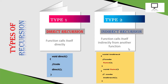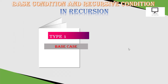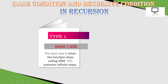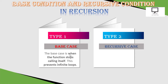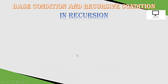A direct recursion function calls itself directly, and an indirect recursion function calls itself indirectly from another function. These are the two main types of recursion. Now let's focus on the heart of recursion — the two conditions: base condition and recursive condition, also called base case and recursive case. The base case is when the function stops calling itself, preventing infinite loop or infinite execution. The recursive case is when the function calls itself to go into the recursive function call.